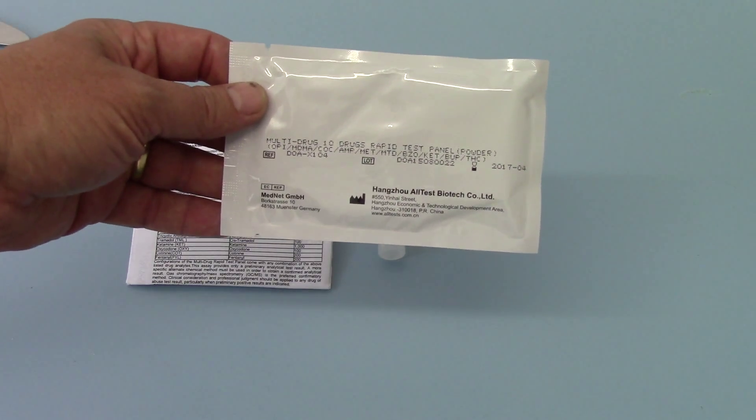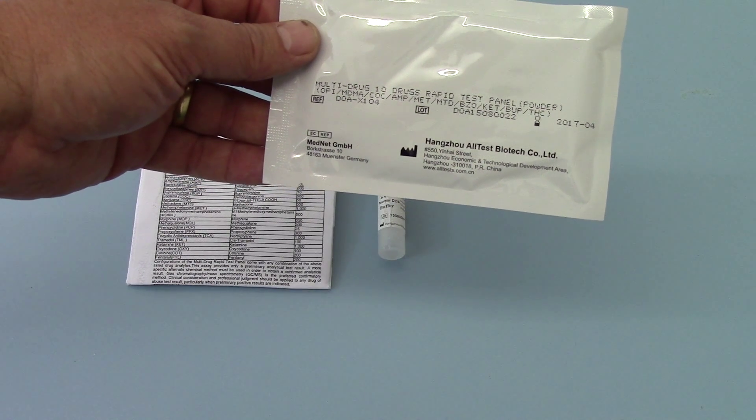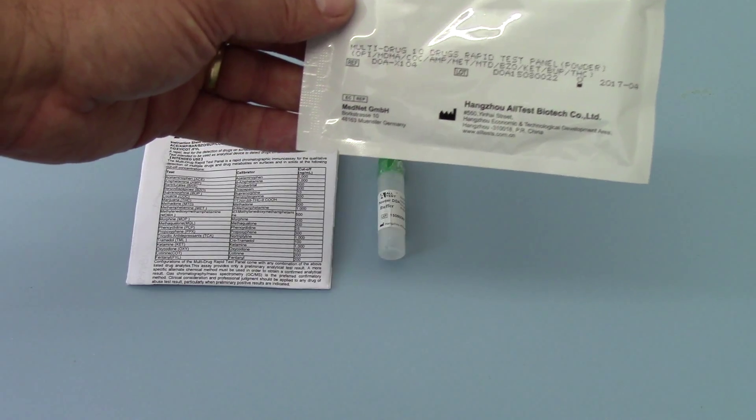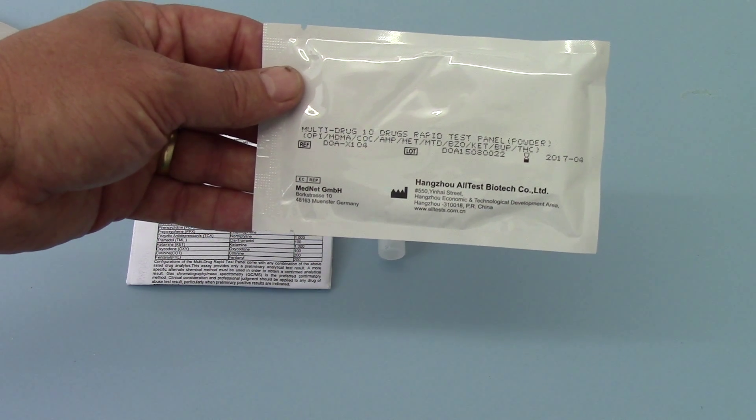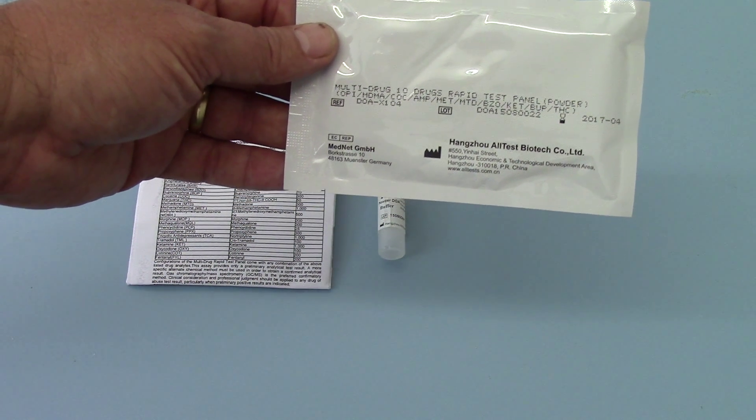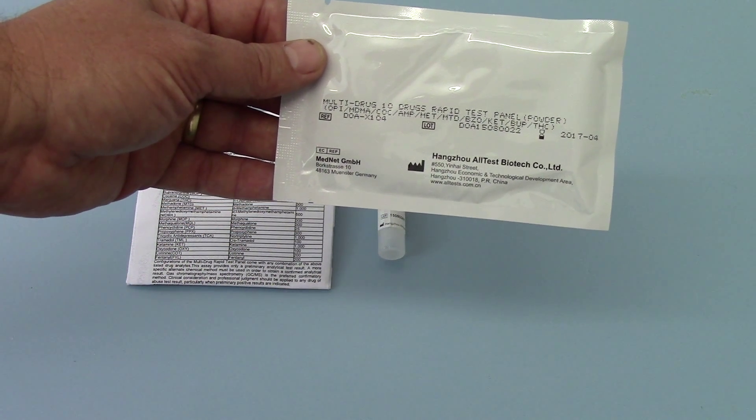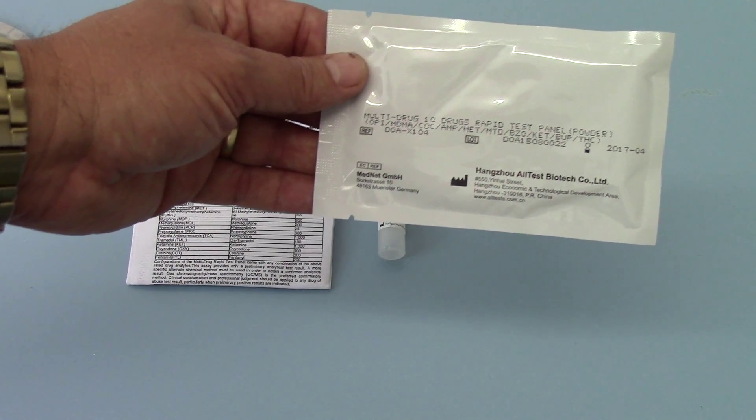Now, this will identify the presence of the 10 following drugs. We're looking for opiates, including all heroines, MDMA, which is ecstasy, cocaine, including crack cocaine residues, amphetamine or speed, methamphetamine, crystal ice, methadone and methadone residues, all benzodiazepines, ketamine, buprenorphine, and cannabis residues.